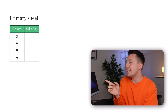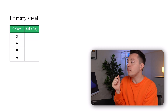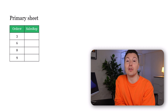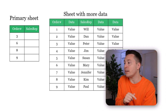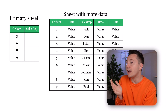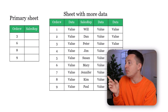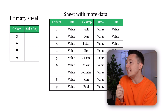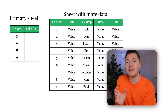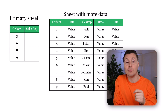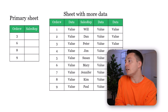Let's say your boss sends you a small list of order numbers and you need to find out who sold those specific orders. You have that data in another file or sheet that looks like an order database. Instead of looking through all the orders in the big sheet manually, which would take forever, you can use VLOOKUP to do that.